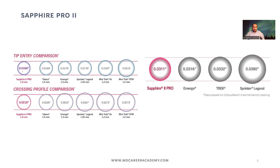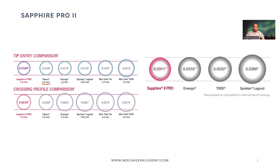For small balloons, the Sapphire currently has the smallest entry profile in the US at 0.0164 inches — and much of that is the wire itself at 0.014 inches. Terumo Emerge has really good rewrap but the smallest size is 1.5 mm. Emerge has a smaller version at 1.2 mm. Sprinter Legend is 1.25 mm, and Mini Trek is 1.2 mm. Over-the-wire balloons have a slightly larger profile. These cross through approximately a 0.0216-inch region.